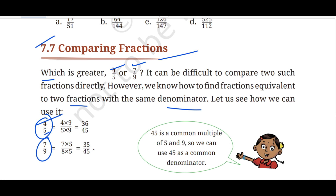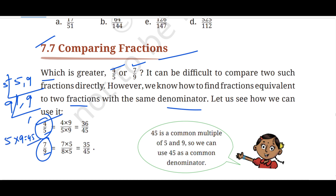Let us compare 4 upon 5 and 7 upon 9. So we have different denominators here — 5 and 9. So we have to take the LCM. When you do the LCM: 5 ones are 5 and you don't get 9, so drop 9 here. Again 9 ones are 9. So 5 into 9 which is 45 is the LCM. Now 5 and 9 are 45, that means you have to multiply with 9.